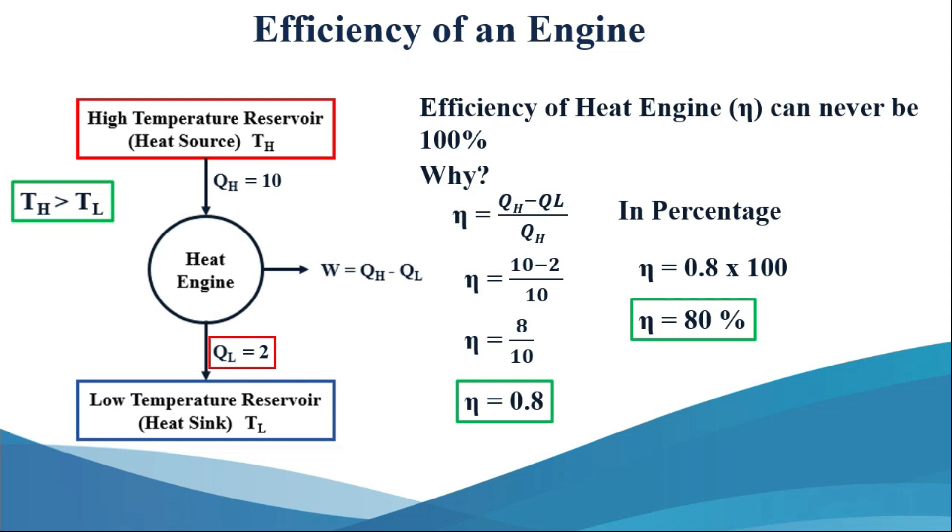And this is the only reason why we have efficiency less than 100 percent, because if this QL becomes 0, then this engine will be violating Kelvin Planck's statement for second law of thermodynamics, and thus this engine does not exist.